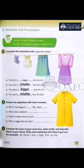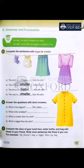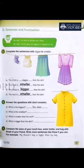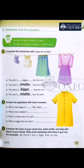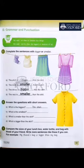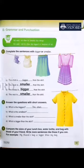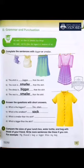Now let's do the second question: answer the questions with short answers. One: what is the biggest? We have EST here, so we are asking about the biggest among all things. What is the biggest? The skirt. Excellent. Next: what is the smallest? We have EST, so what is the smallest? The socks. Very good, we write: the socks.